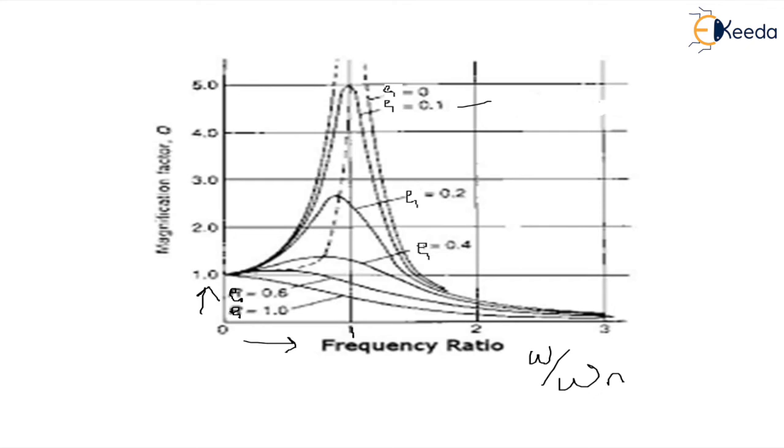Then we also see as zeta increases, the magnification factor decreases. The maximum value of magnification factor decreases in that direction. So zeta is increasing in this direction, magnification factor is also decreasing in this direction and vice versa.